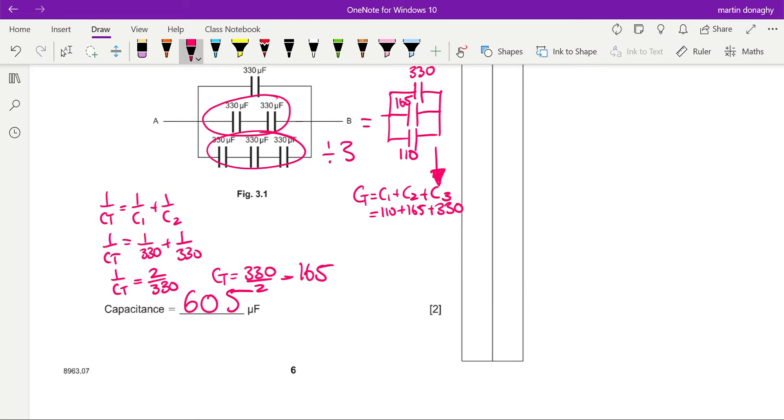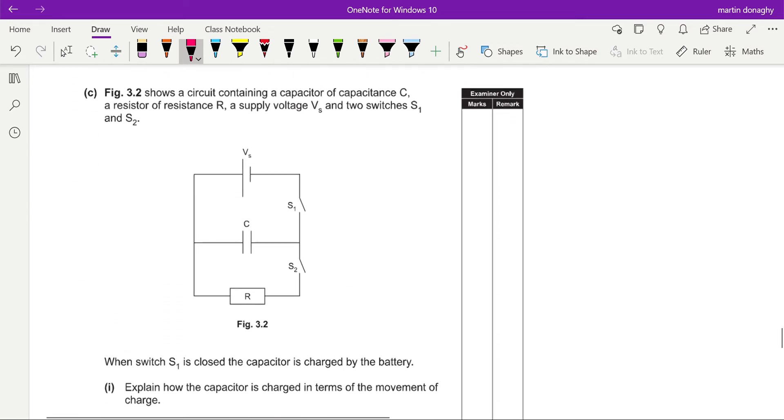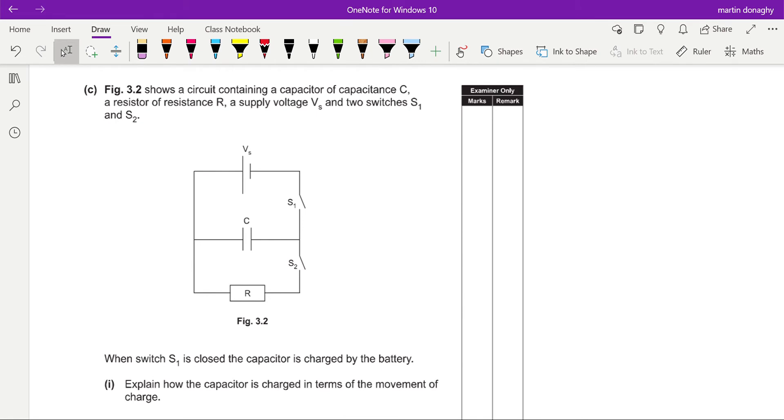And that should give you 605 microfarads. Okay, so break it down into those smaller steps and the smaller steps are easier than trying to think of it all at once. Next one, Figure 3.2 shows the circuit containing a capacitor of capacitance C, a resistor of resistance R, and a supply voltage VS and two switches S1 and S2.